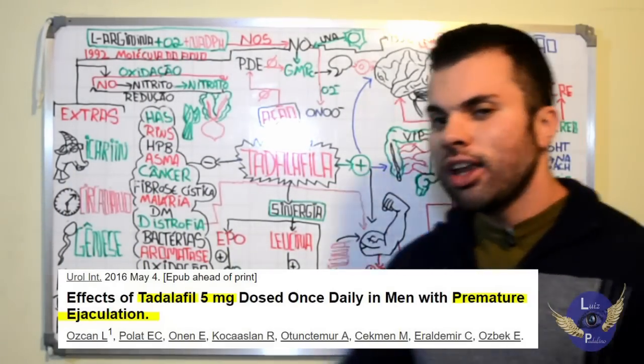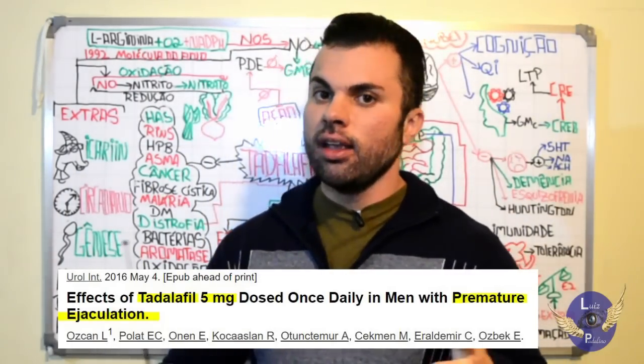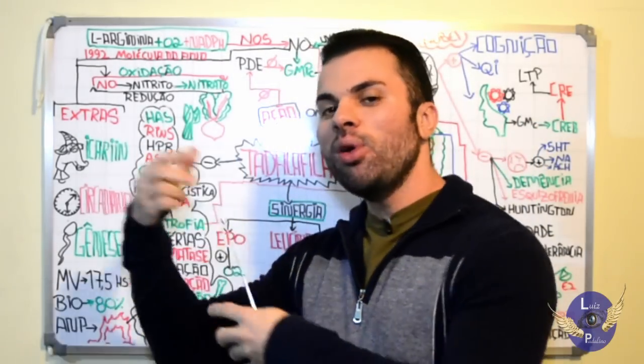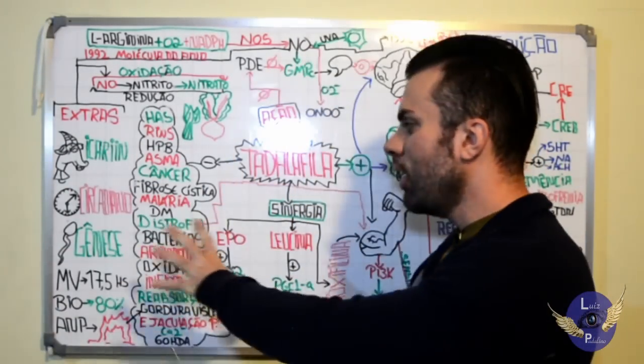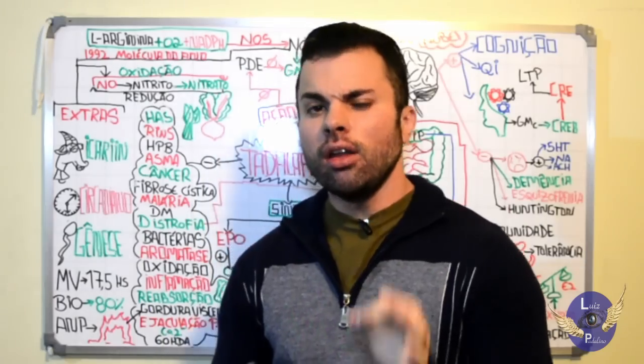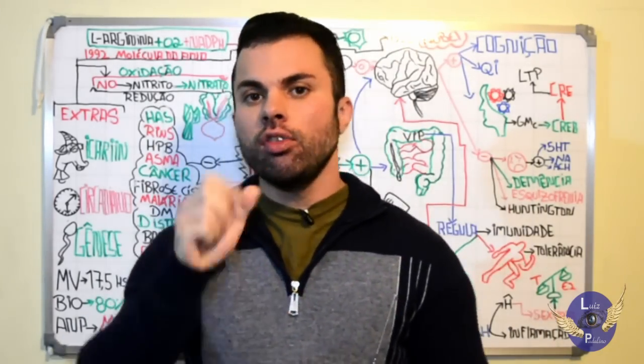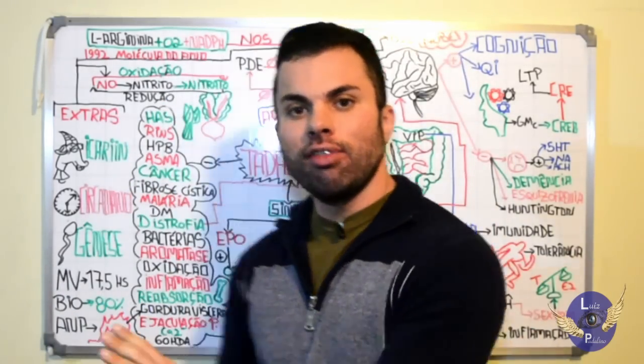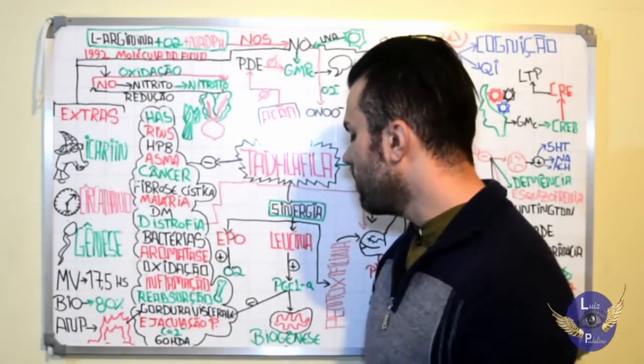It improves premature ejaculation. What great news for you men who sometimes can't control that timing so much. You'll be able to prolong the act much more, until we finally arrive. Look at a special tip from Padalino. If you mix, for example, with some opioid activator, with low doses of kratom, this effect is synergistic and potentiated.